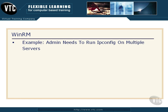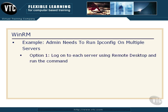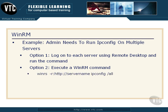Now let's talk about why you would do this and why WinRM is such a neat feature. Let's say you're an administrator and you want to run ipconfig on multiple servers and verify their IP addresses. Well, you've got one option — log on to each server using remote desktop and run the ipconfig command, or physically go to every one of those servers. Or notice option 2: you could just execute a WinRM command from your own command prompt. It's going to look something like this — WinRS -R, then the target server name you're trying to run this command on, put a space, and then pass your command. And you will see the results show up in your command window. Really neat functionality.